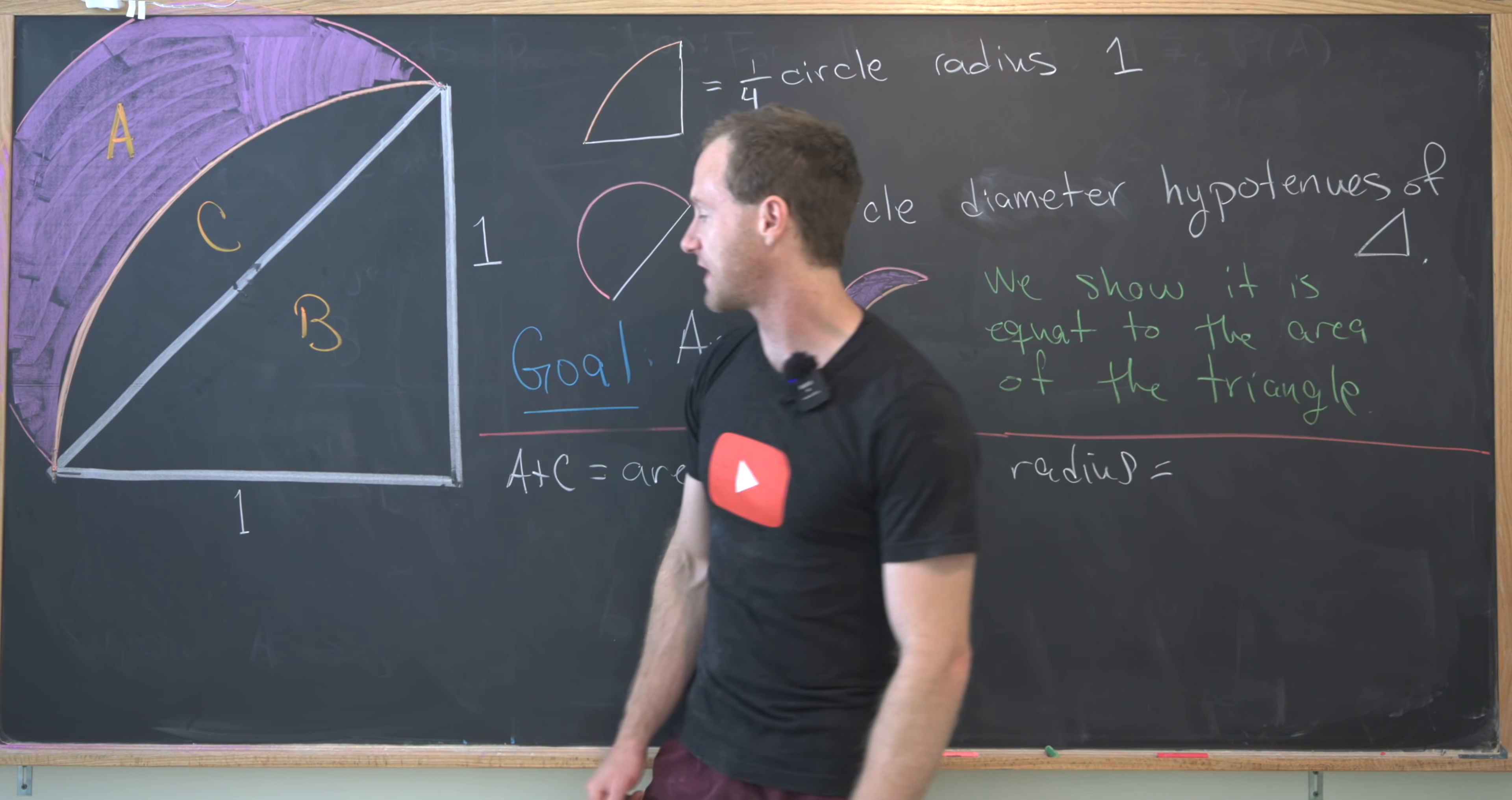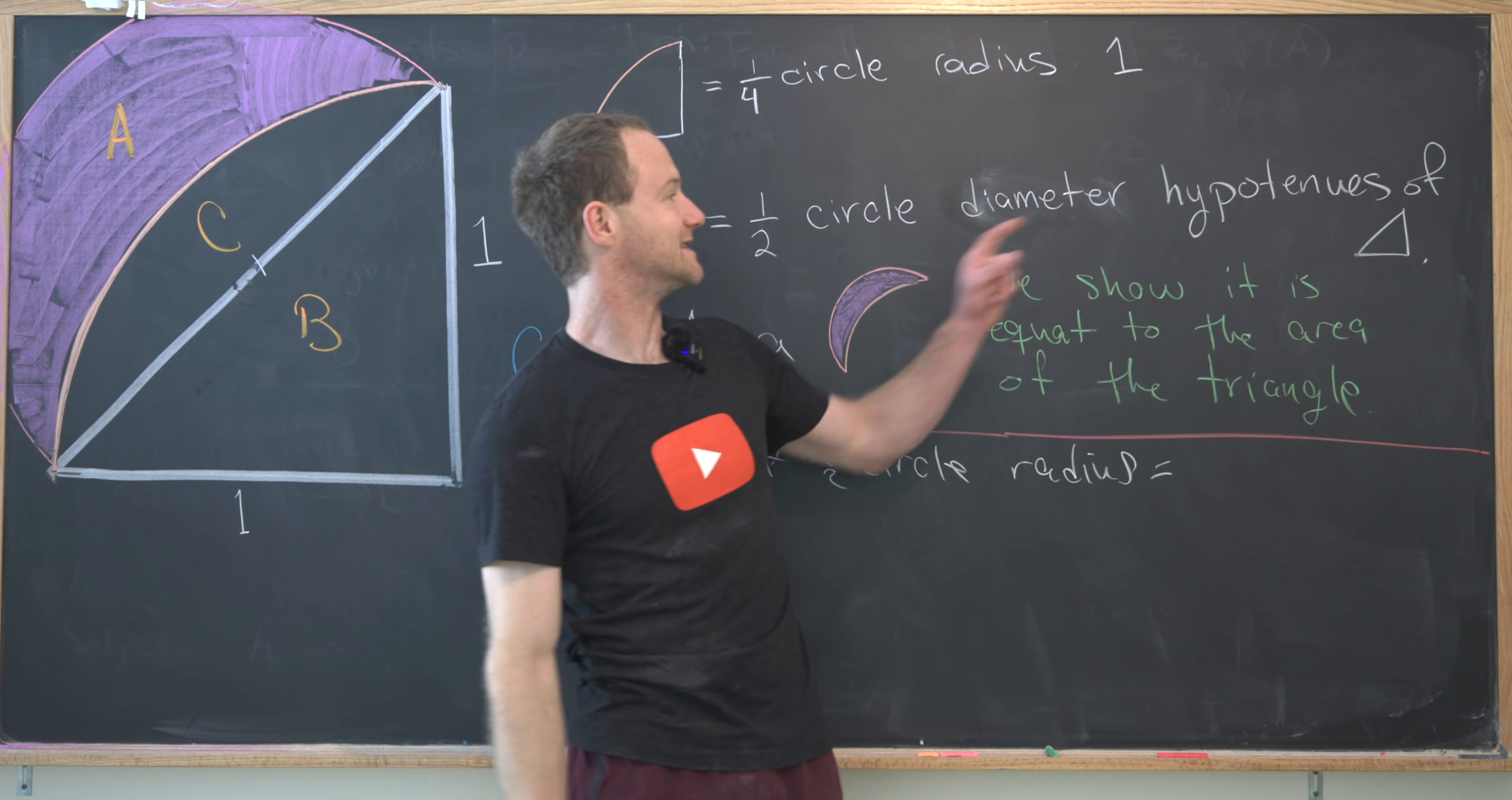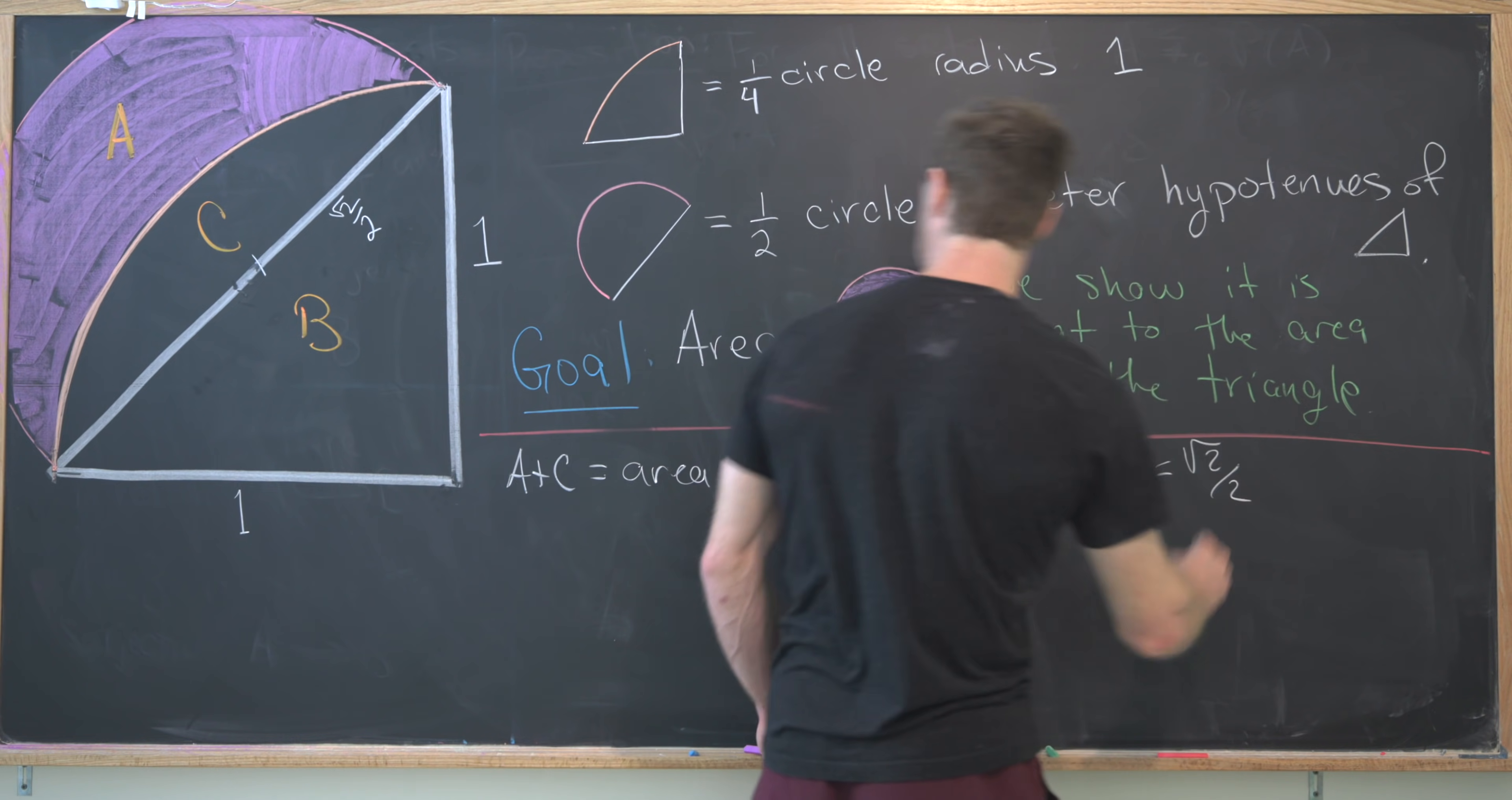So let's see. By the Pythagorean theorem, we know that this hypotenuse is the square root of one squared plus one squared. So that means that this hypotenuse is square root of two. But this hypotenuse is a diameter of our circle. So that means in order to have the radius of this circle, we need to use the square root of two over two. So here, we'll write this as root two over two.